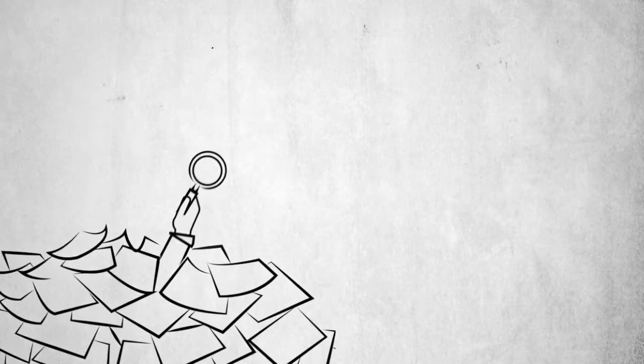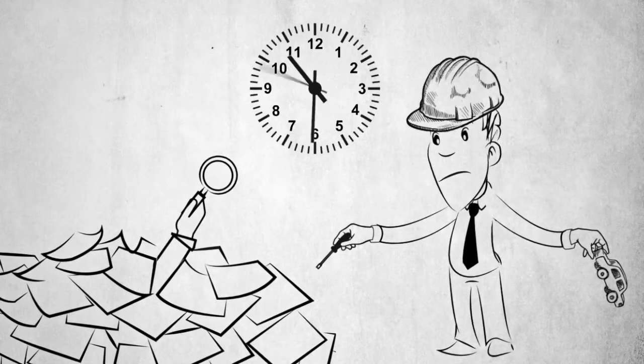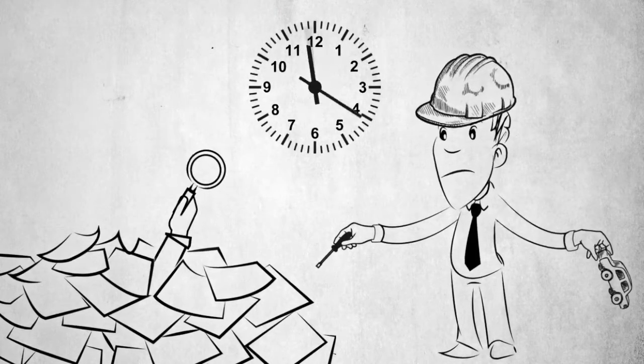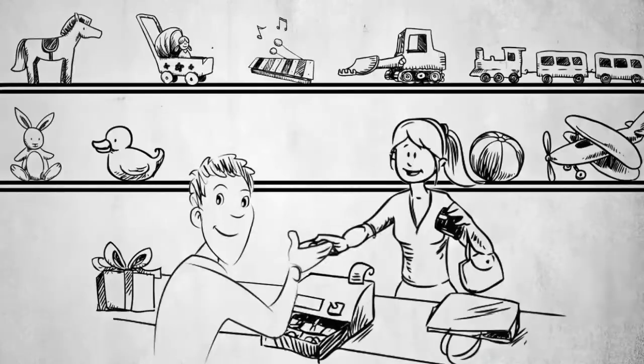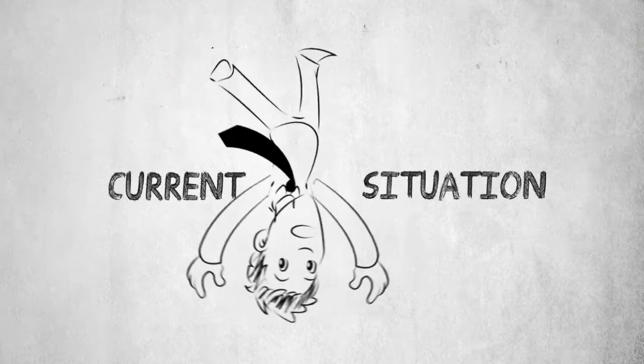With their current managing methods, Joe and his team are investing more time finding information and fixing problems than doing what they actually do best, manufacturing and selling toys. Joe is a smart guy, and he knows his current situation just isn't working.